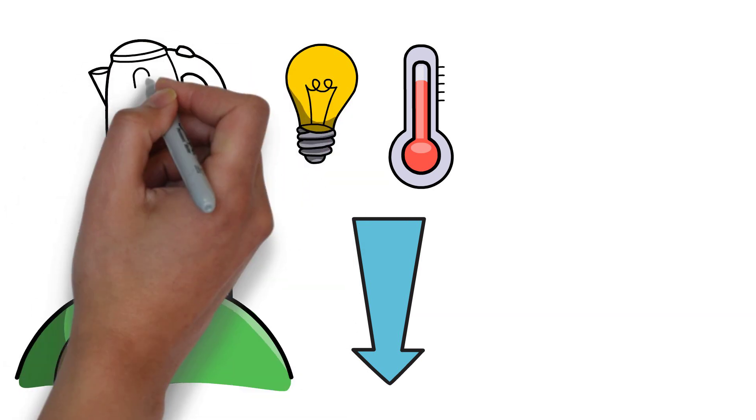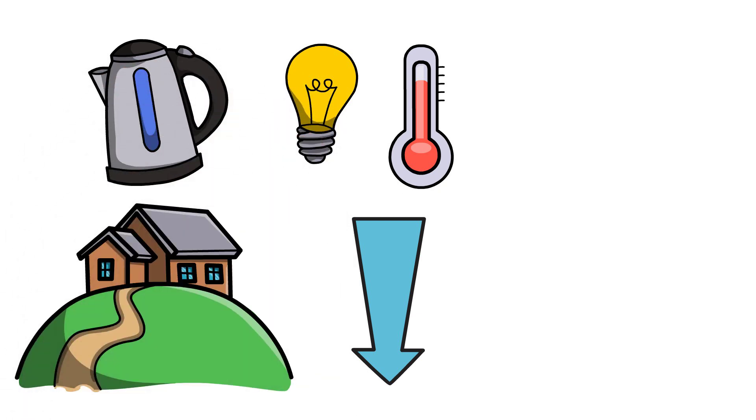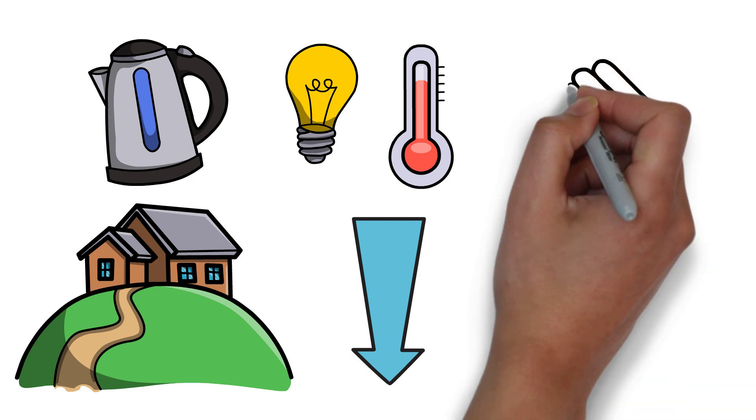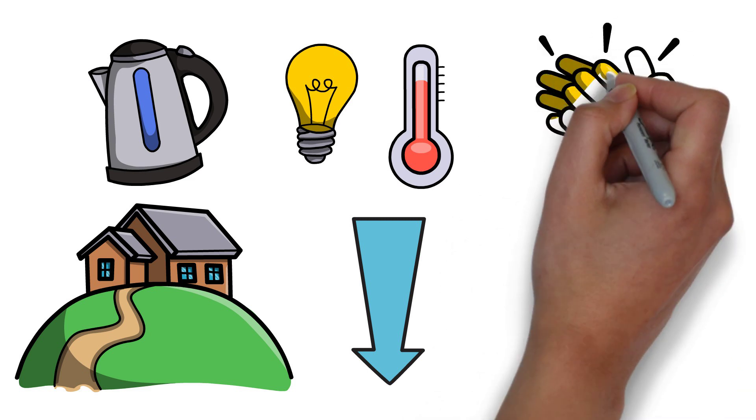Lower the temperature of your hot water heater so the water isn't being kept unnecessarily high at near boiling temperatures. Take quicker showers to reduce your water bill. You know your water is being kept too hot if you aren't able to run your hands underneath the faucet when it's on the hottest setting.